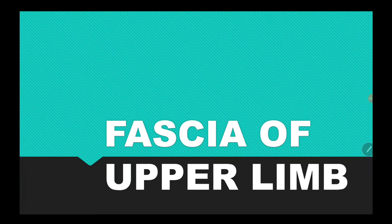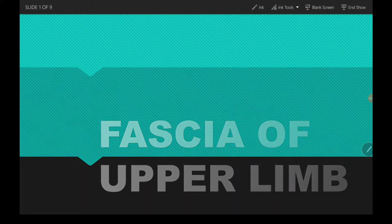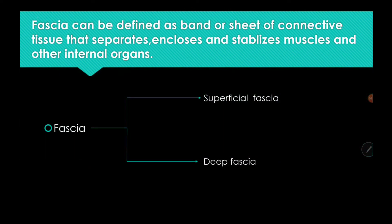Today's topic is about the fascia of the upper limb. The word fascia means a band or sheath of connective tissue. Its function is to separate, enclose, and stabilize muscles and other internal organs, meaning it has protective functions. Fascia can be classified into two types.